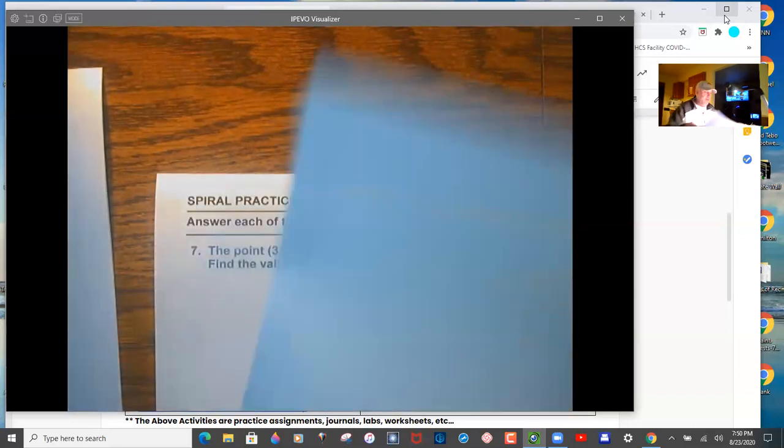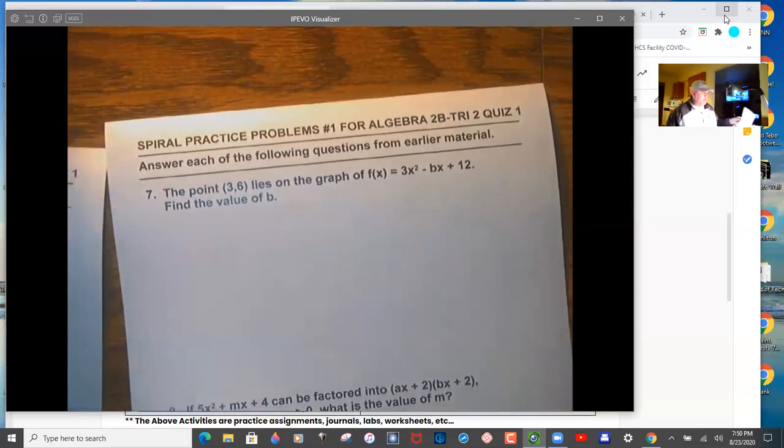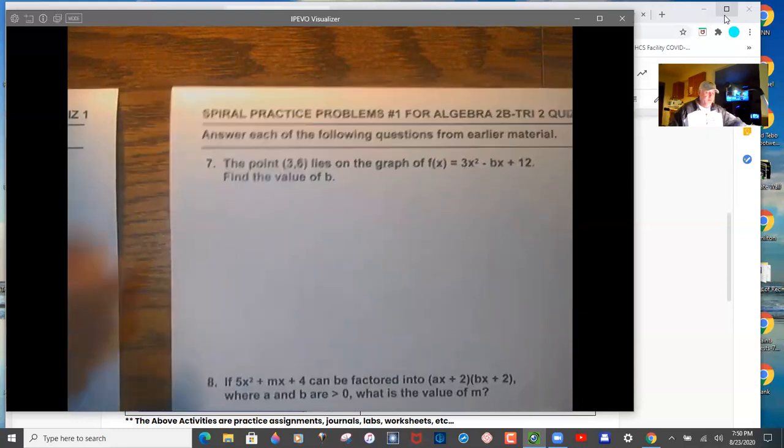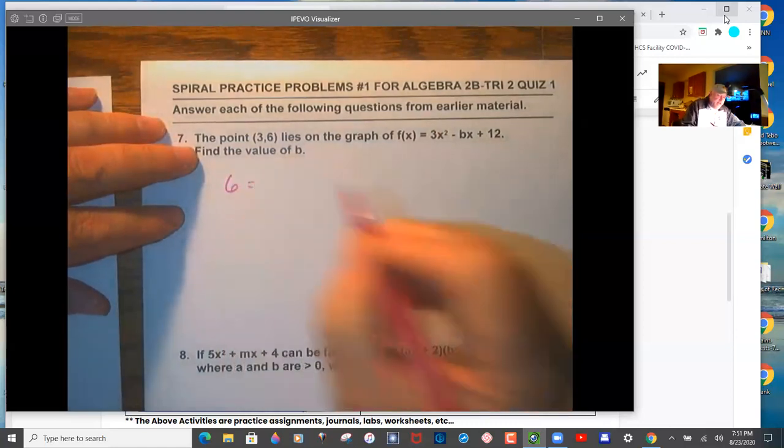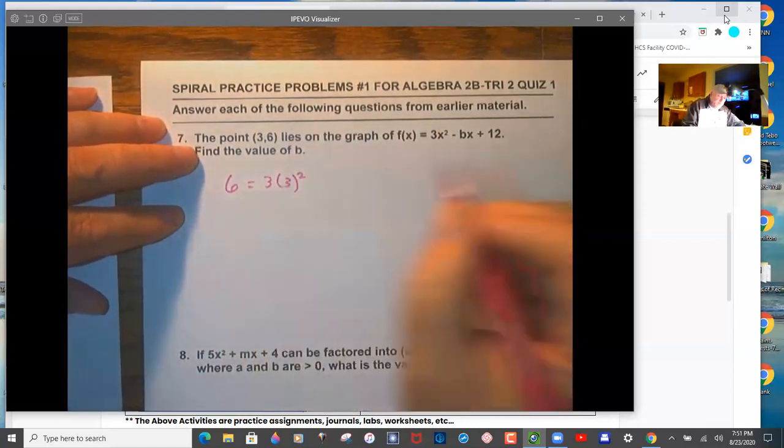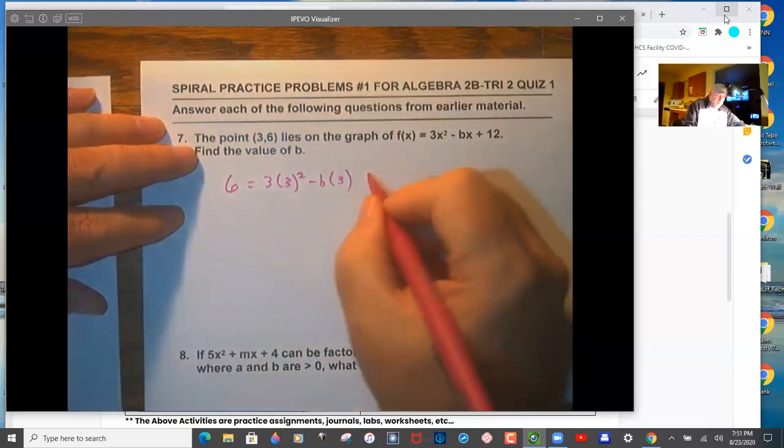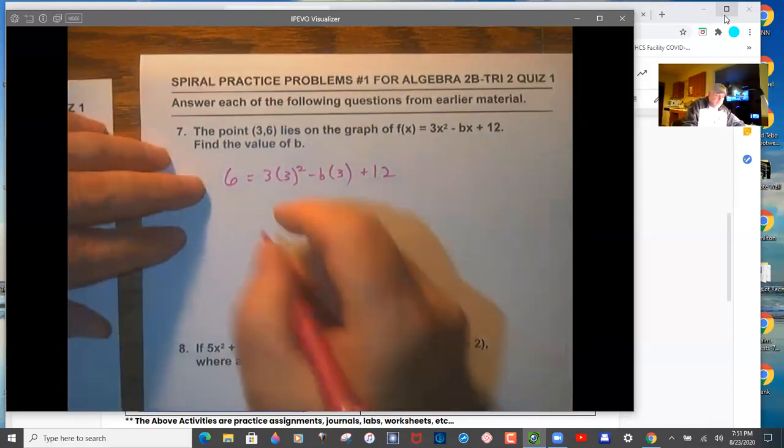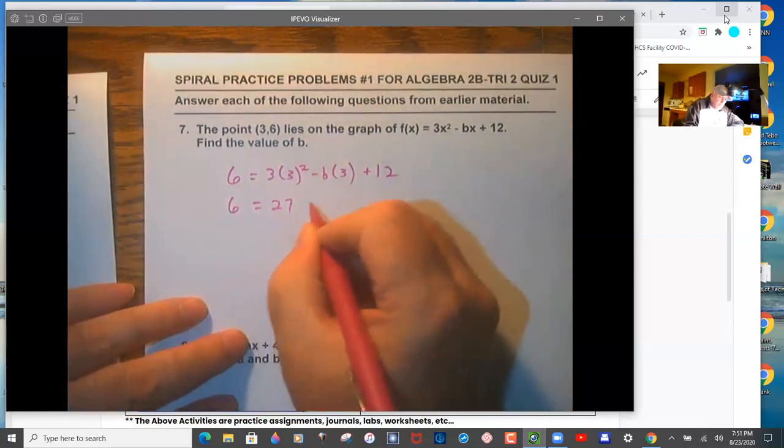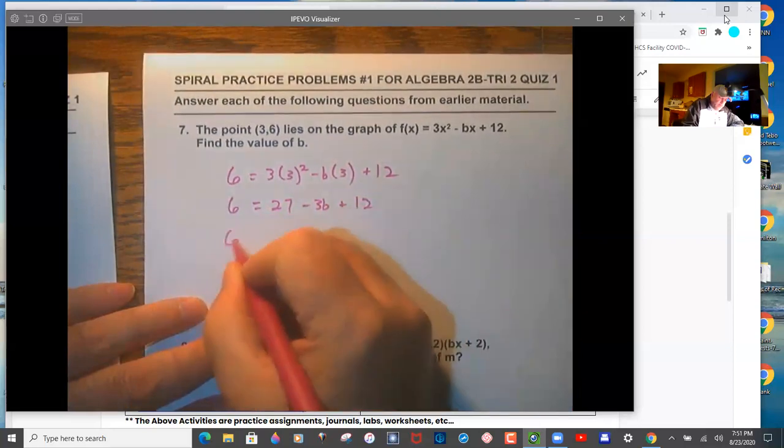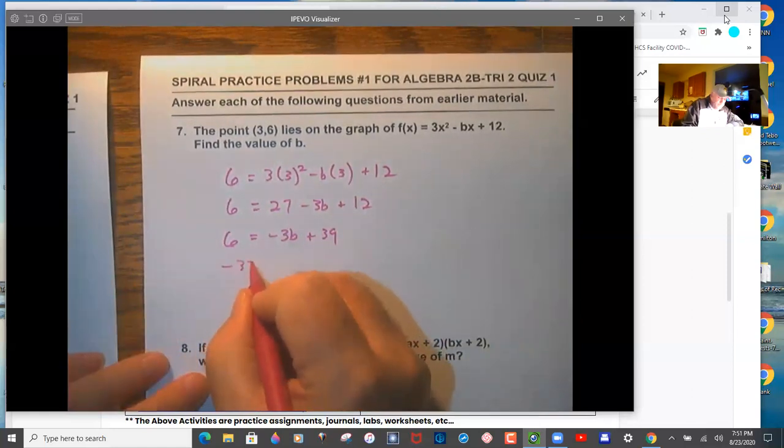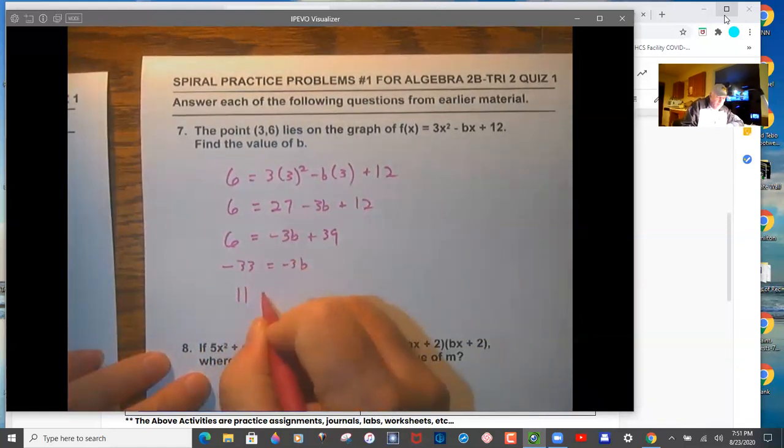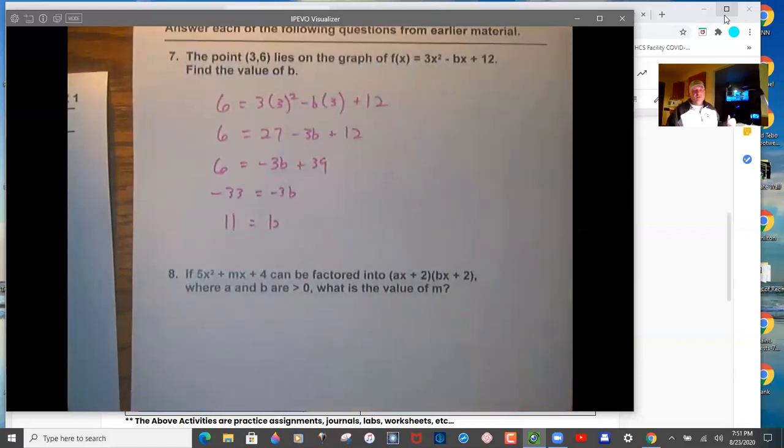It might have been easier than the tier twos. Then we have, of course, our spiral problems. So this is to sharpen you for your SAT. So the point (3,6) lies on this. That means we substitute it in. Six is y and three is x. Solve for b. It's a substitution game. I probably could have added 27 and 12 there. Negative 3b plus 39 equals negative 3b. Pretty easy. It's a solve game.